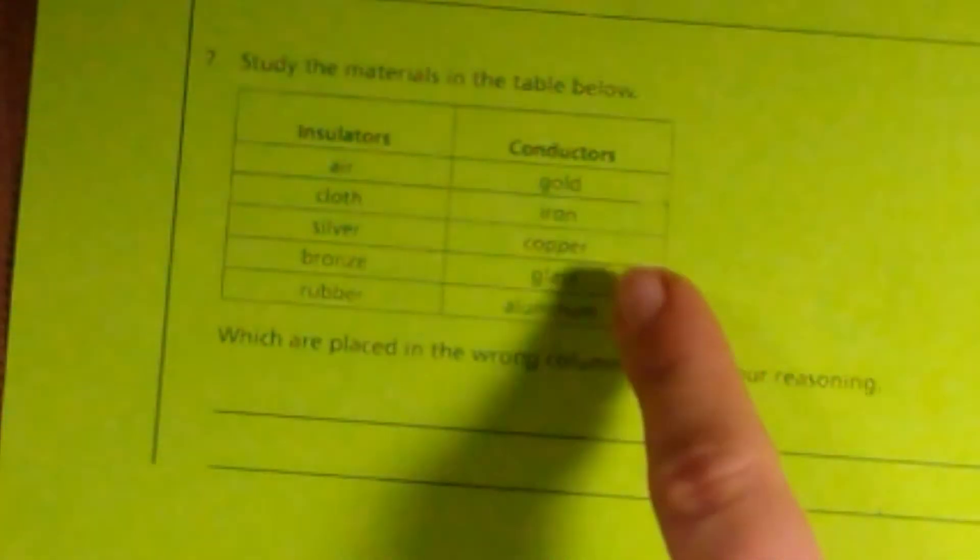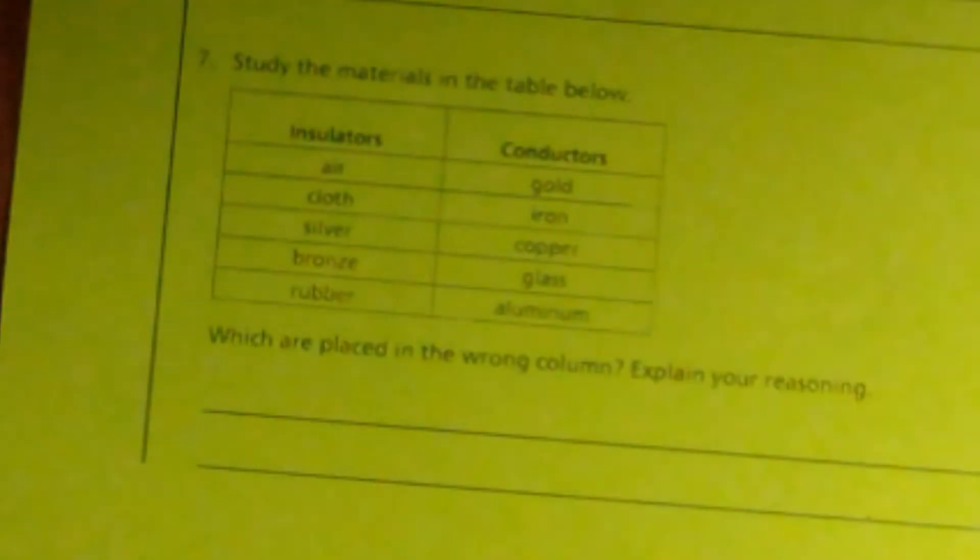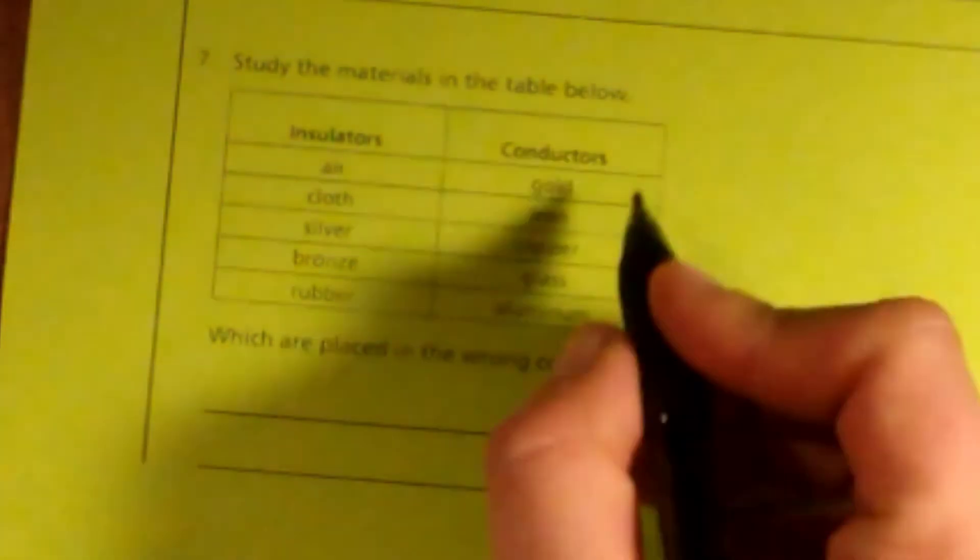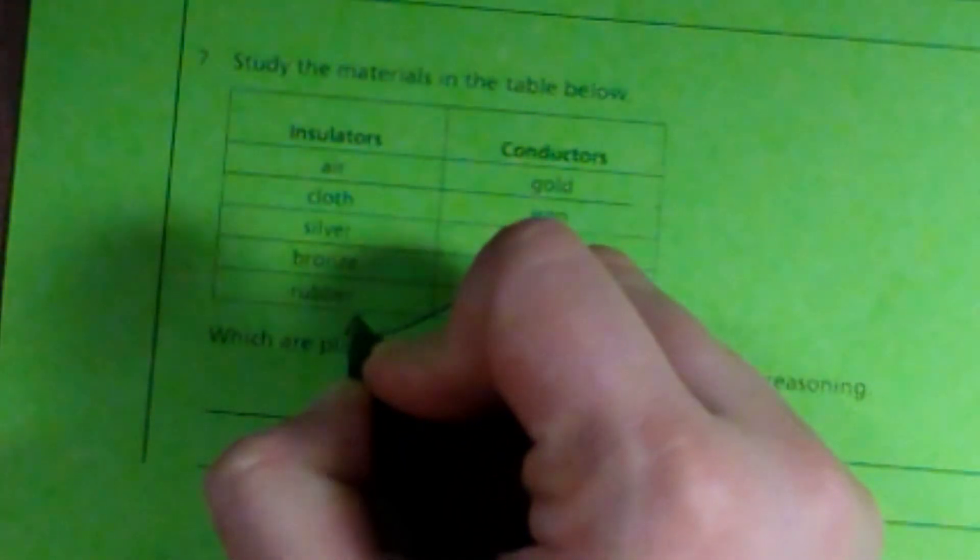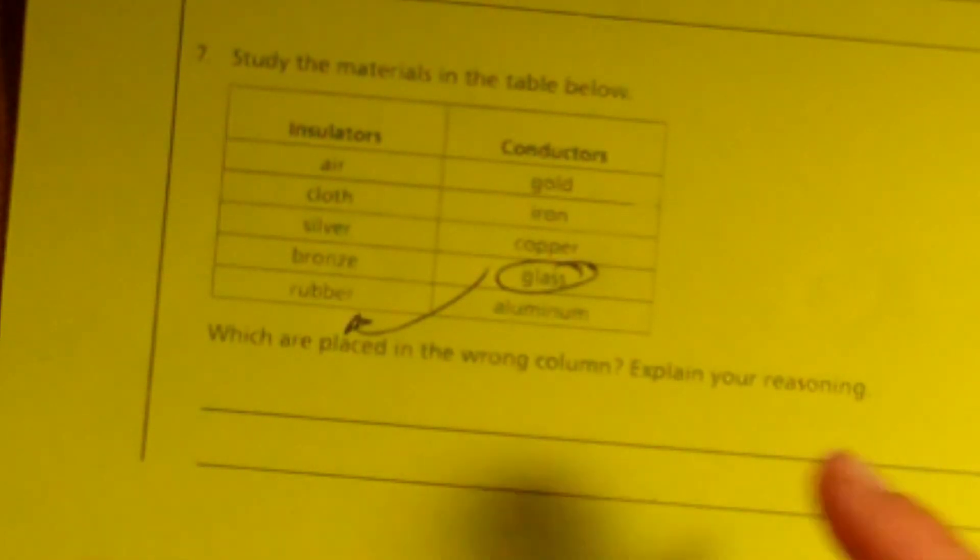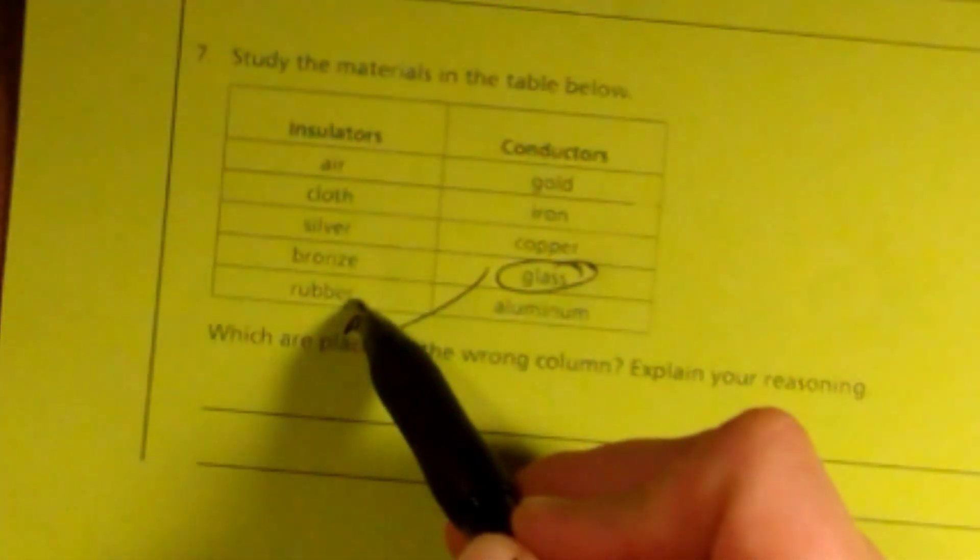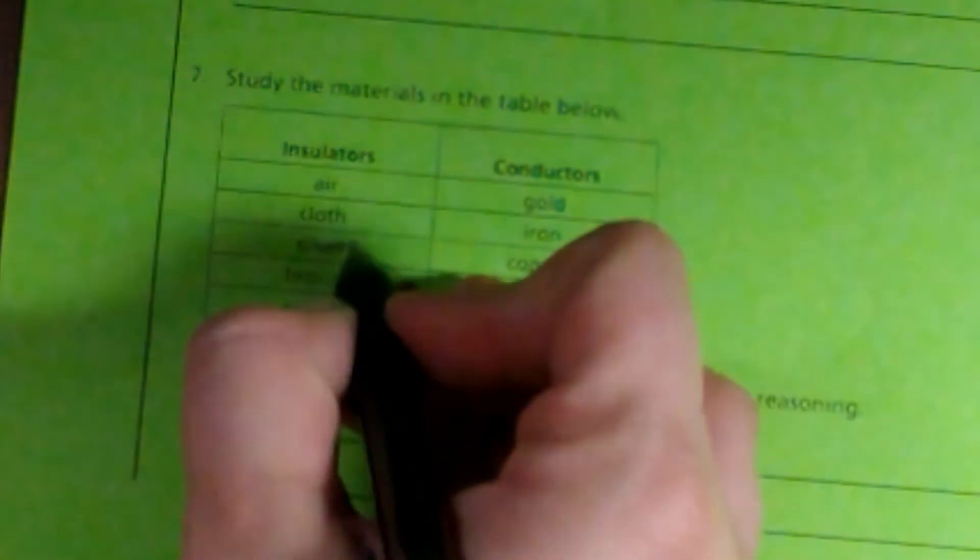Conductors: gold, iron, copper, glass, aluminum. Which are placed in the wrong column? Well, glass is not a conductor. Glass is an insulator. And silver and bronze are conductors.